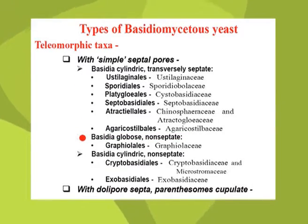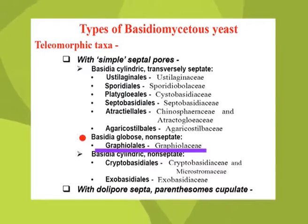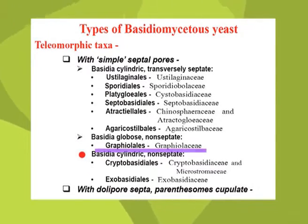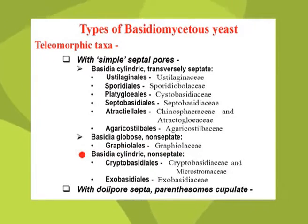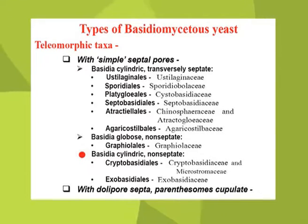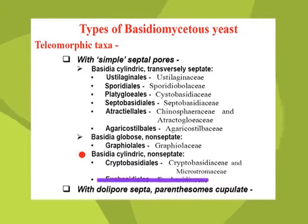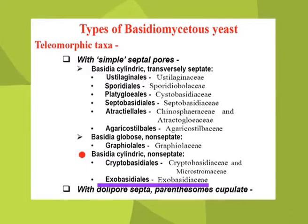In the next group, basidia are globose and non-septate, which includes only one order, Graphiolales. In the third group, under the subhead 'taxa with simple pore,' two different orders are included — Cryptobasidiales and Exobasidiales — where the basidia are cylindric and non-septate.